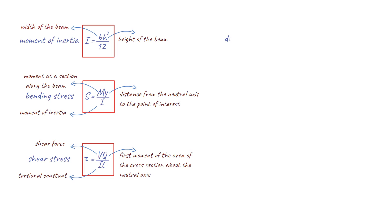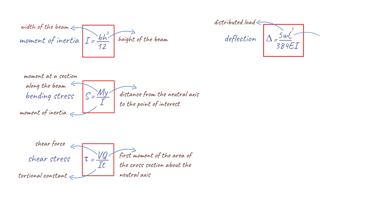Now, let's look at the formula for deflection of a beam. This is represented by the equation where w is the distributed load on the beam, L is the length of the beam, E is the Young's modulus of the material, and I is the moment of inertia of the beam. This formula is used to calculate the amount of deflection or bending a beam will experience under a load.